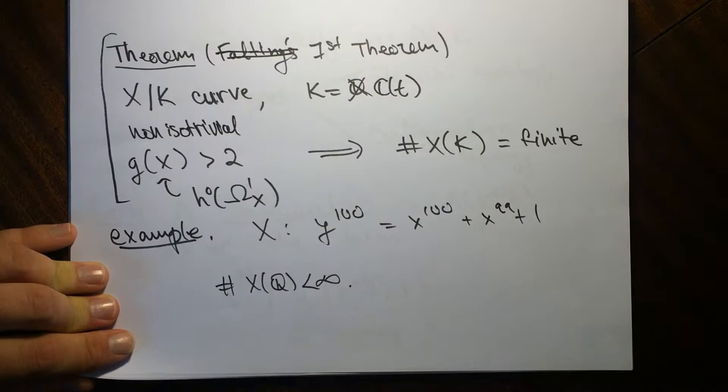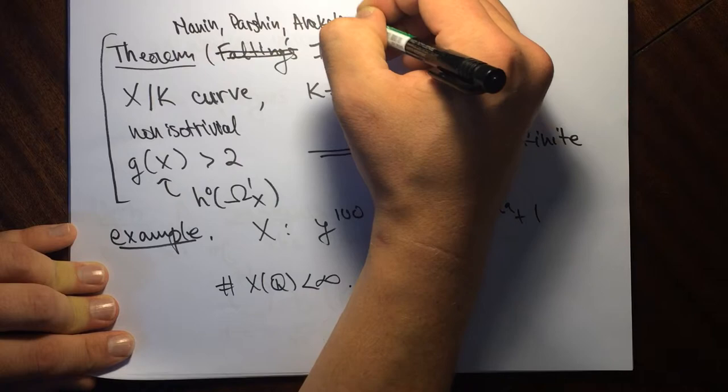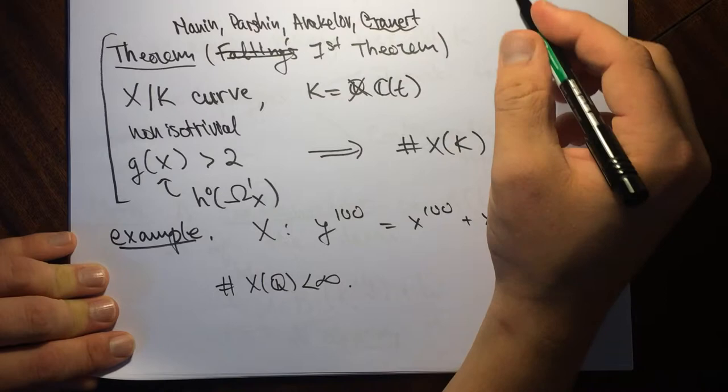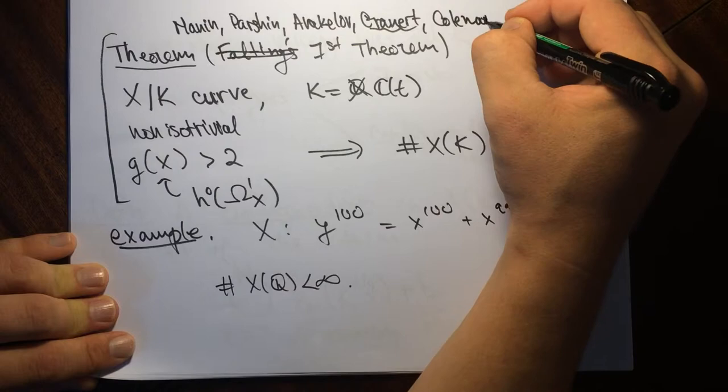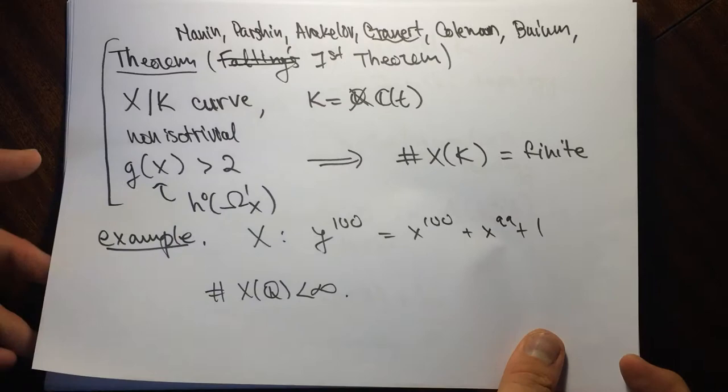The theorem was due to Mann, Parsin, Samuel, Grauert — Grauert has one of the big ideas — Coleman, and others. There are lots of names involved in different proofs of these things. The upshot is: if you take a non-isotrivial family over a function field, the K-points turn out to be finite.